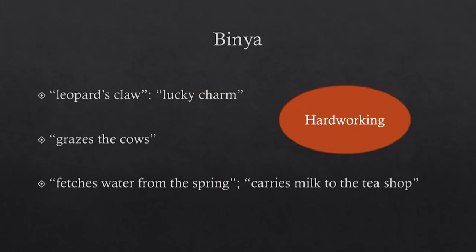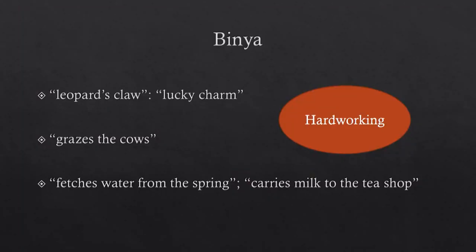The first interesting event when this short fiction begins is the fact that Binya trades her leopard's claw for the blue umbrella. She wears a necklace of glass beads with a leopard's claw — her lucky charm. She is also very hardworking: she helps graze the cows, fetches water from the spring, and carries milk to the tea shop. This information is important to understand the socio-economic subtext of this family — a family with no father, just the mother and two children, Binya and Biju.